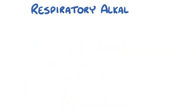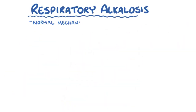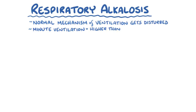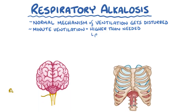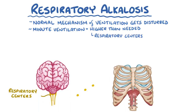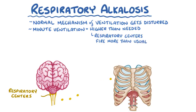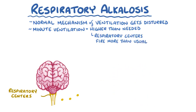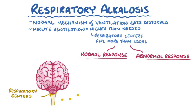In respiratory alkalosis, the normal mechanism of ventilation gets disturbed, and the minute ventilation goes higher than what's needed to balance the pH. For ventilation to increase, the respiratory centers have to start firing more than usual. This increased firing might be a normal compensatory response, or an abnormal response to a situation that doesn't really call for increased ventilation.